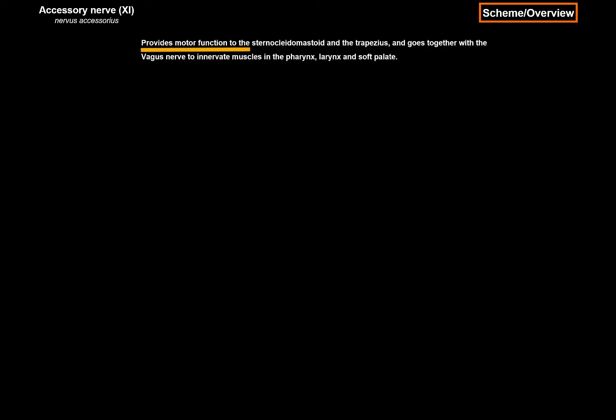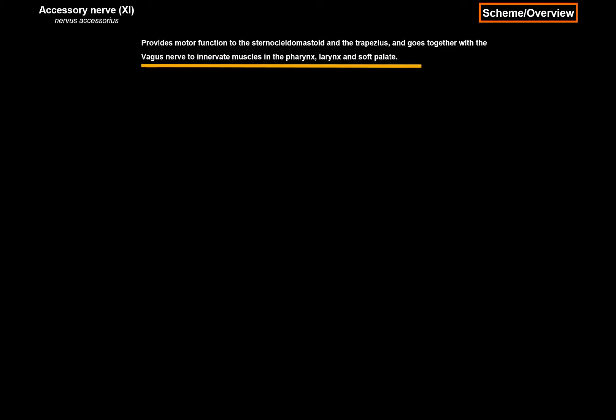The accessory nerve is purely a motor nerve. It provides motor function to the sternocleidomastoid and the trapezius. And it goes together with the vagus nerve to innervate the muscles of the pharynx, larynx, and the soft palate. So it's accessory to the vagus nerve.